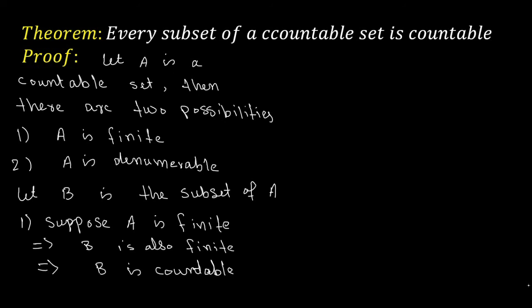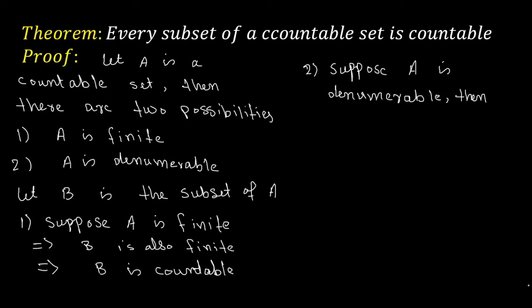The second case is suppose A is denumerable. If A is denumerable, then there are again two possibilities.